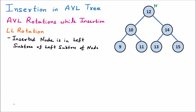The left portion of the root is the left subtree and the right portion is the right subtree. Going further, node 10 has a left subtree which is 9 and a right subtree which is 11. Node 14 has 13 on the left and 15 on the right. This is the configuration of the tree, and based on our insertion the rotation will be applied.